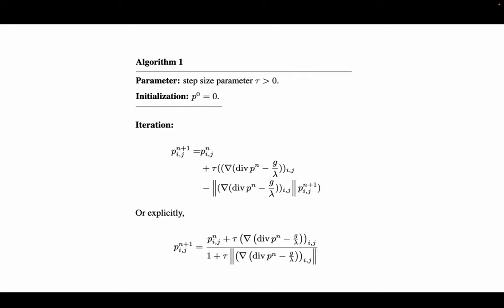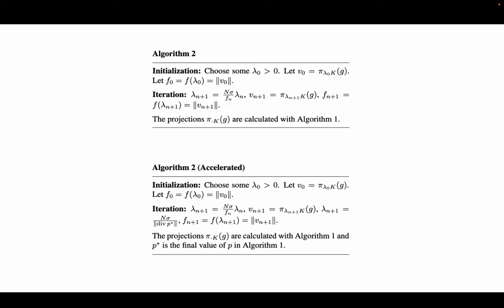And here we have algorithm 1 that he proposed, which is a semi-implicit gradient descent algorithm here. And next we have algorithm 2, and an accelerated version of his algorithm 2, where he chose lambda n plus 1 to a specific value that accelerates its calculation. Using some projection method.